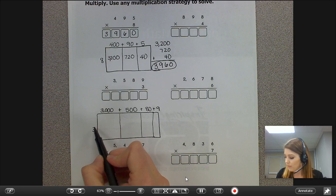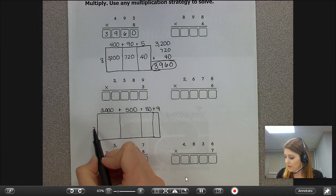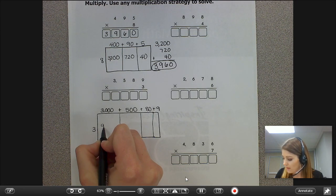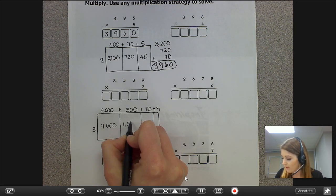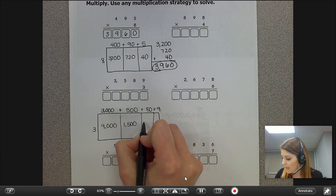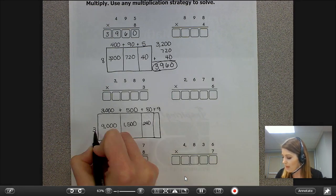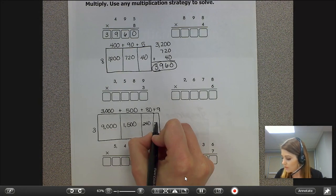So starting with the greatest place value 3 times 3,000 is 9,000. 3 times 500 is 1,500. 3 times 80 is 240. 3 times 9 is 27.